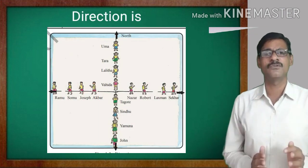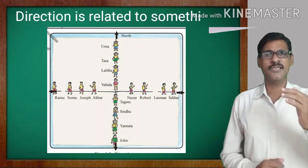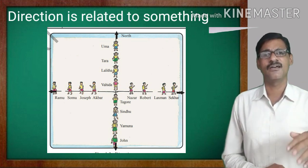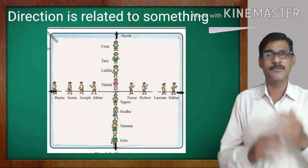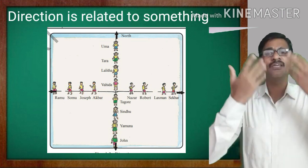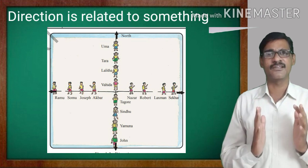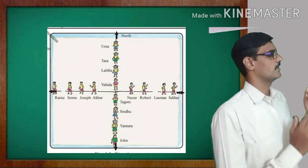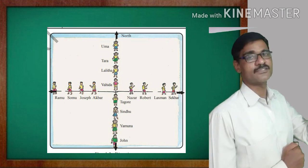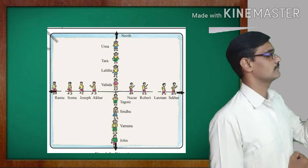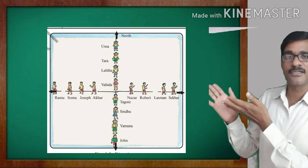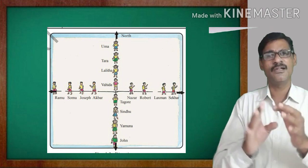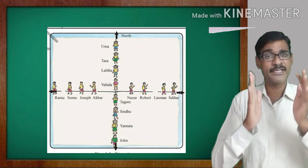Direction is always relative — the same place can be on the east, west, south, or north depending upon from which direction we are looking at it. For example, if I am standing here watching you and then I turn to another position, the direction is changed. When you move to a different place, the direction changes. The same thing can appear in different directions depending upon our view.